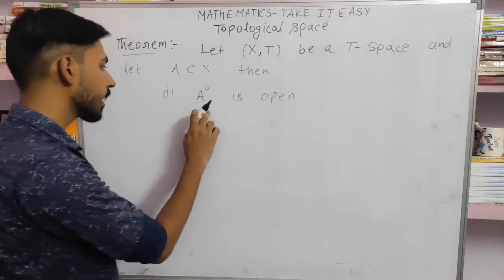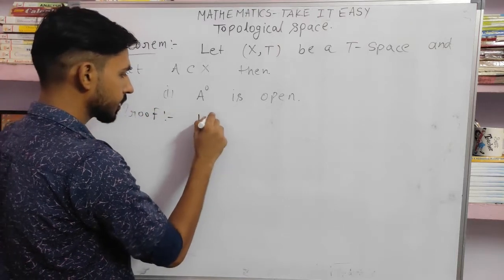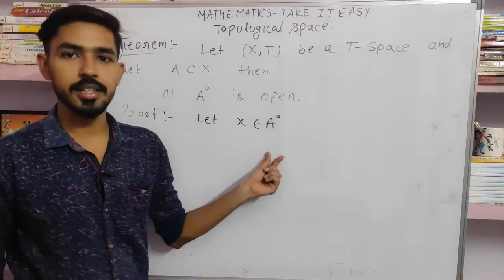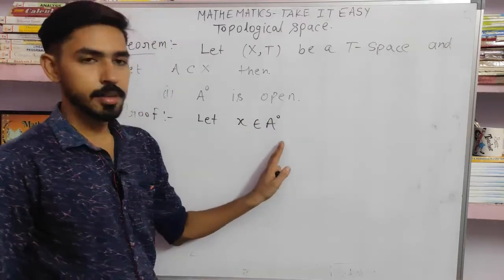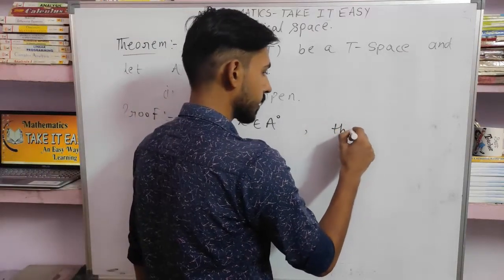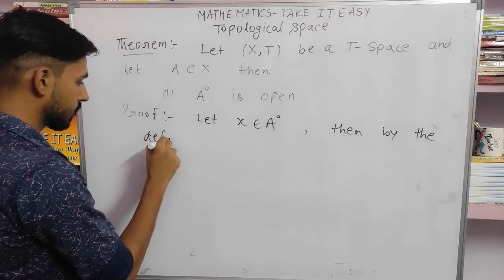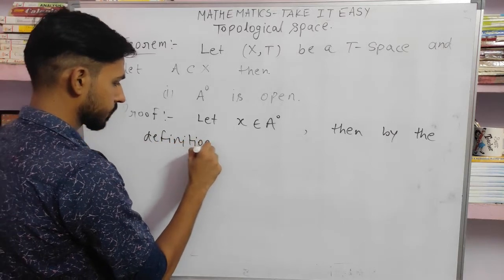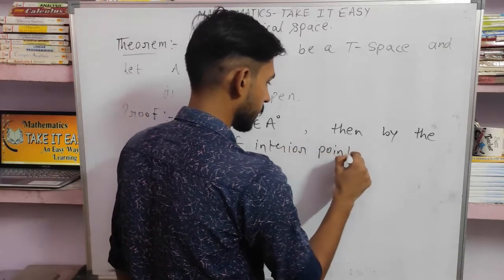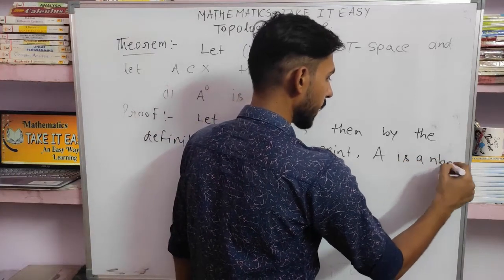For this, let x be an arbitrary point of A interior — let x belong to A interior. If x belongs to A interior, then by the definition of interior point, A is a neighborhood of x.